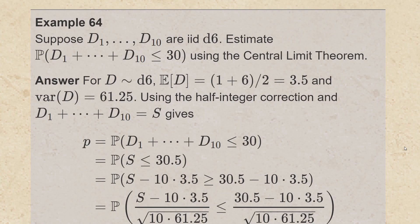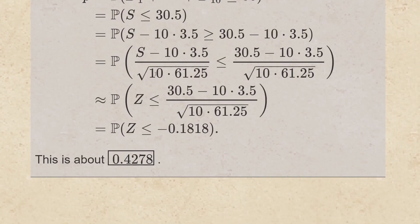Now there's no approximation yet — at this point we're still just doing things exactly. I can subtract 10 times 3.5 from both sides of the inequality. I can divide by the standard deviation of s, which is the square root of 10 times 35/6. The thing on the left I can approximate by a standard normal, and the value on the right can be calculated as negative 0.1818. This evaluates to about 0.4278. So that's the story of the central limit theorem.